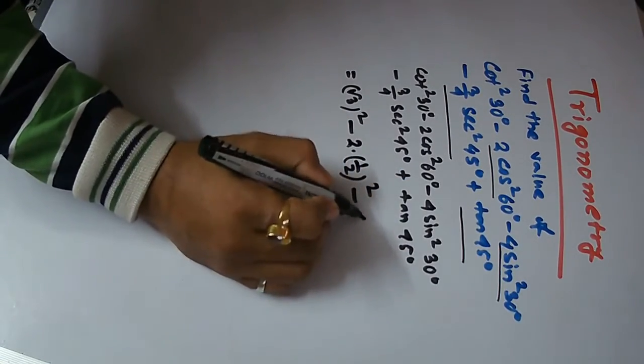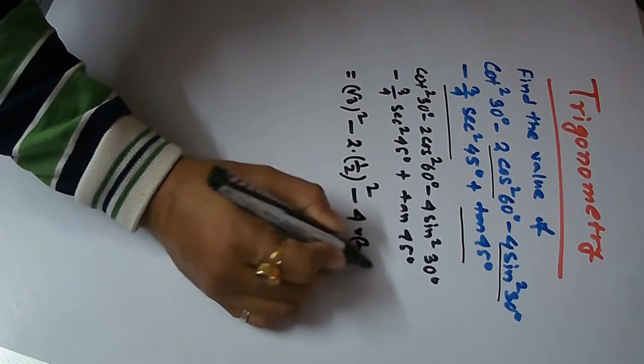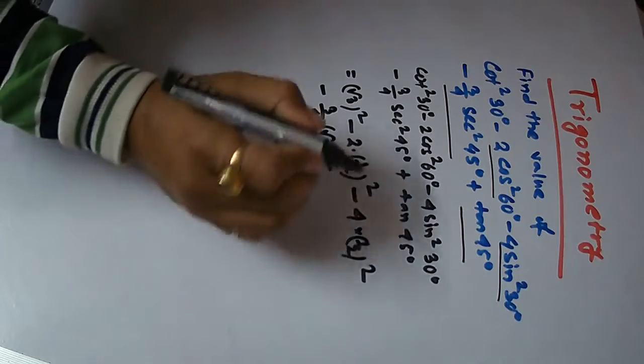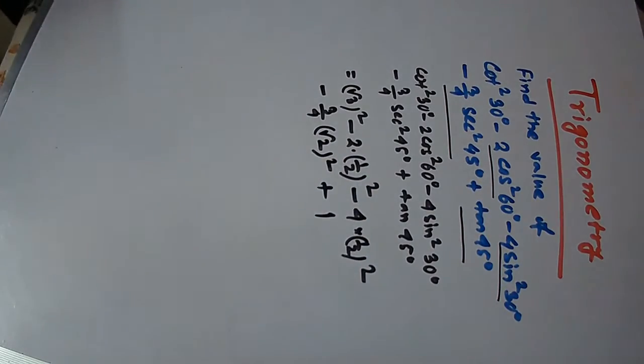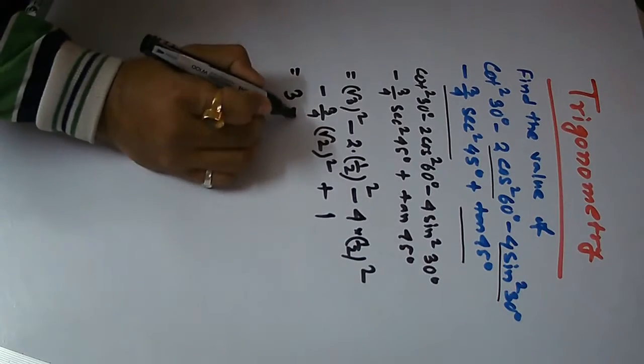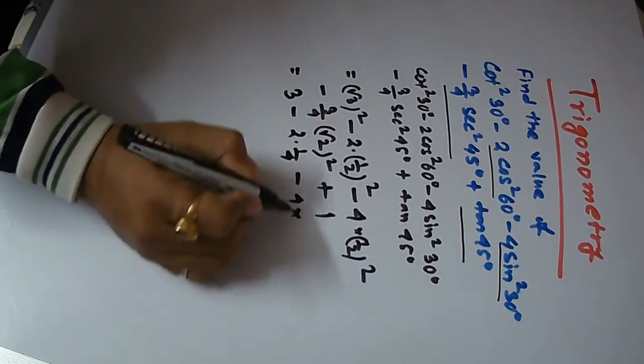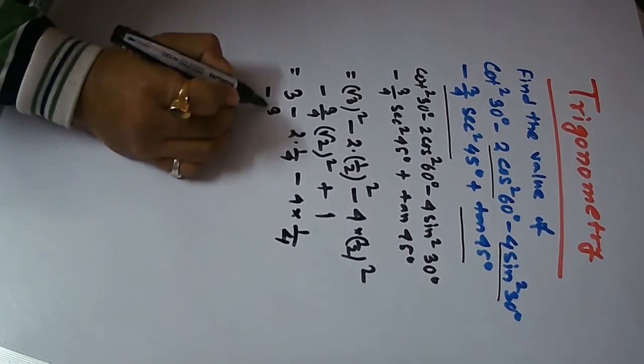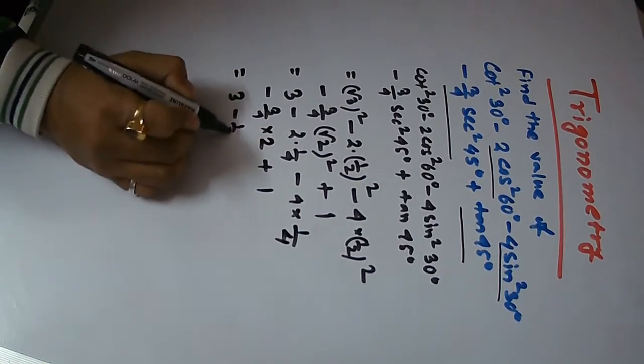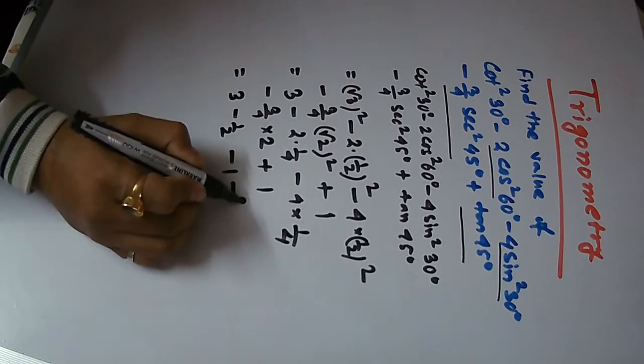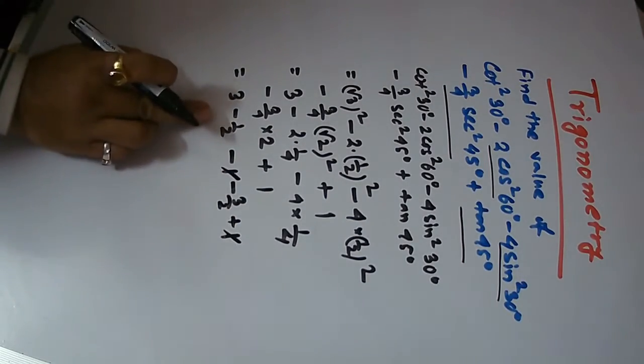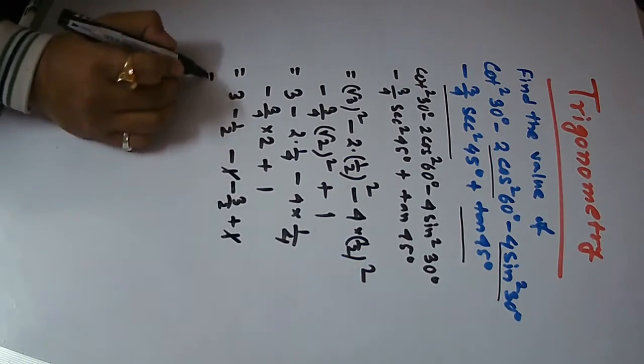1 by 2 squared minus 3 by 4. For 45 degrees, 1 by root 2, root 2 squared, plus sin 45 degrees, tan 45 degrees equals 1. 2 into 1 by 4, 4 into 1 by 4, minus root 3 by 4 into 2 plus 1. 1 by 2 minus 3 by 2, 1 minus 1 plus 1. 1 by 2 minus 3 by 2, 3 minus 4 by 2.